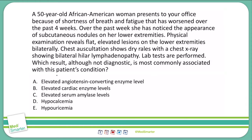There are some key things to pay attention to in order to answer this question, and some things you can ignore. First, this is an African-American female, which can give us clues as to who might be more susceptible to certain diseases. Those subcutaneous nodules are flat, elevated lesions on her lower extremities bilaterally. We also see dry rales and bilateral hilar lymphadenopathy. Putting all of these symptoms together makes me believe we're dealing with sarcoidosis. Now let's look at our answer choices.